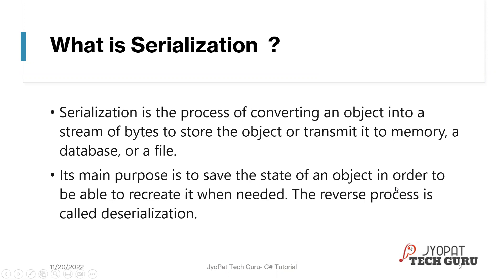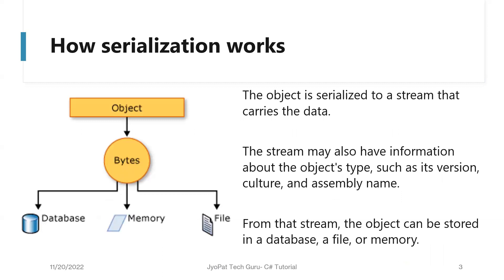Whenever you want to convert a particular object, you are first converting it into bytes. Those bytes can be stored in different ways — either in files, in a database, or in memory. The deserialization process is the reverse: we extract the original object from the converted data. There is also a built-in interface called IFormatter which is useful whenever you want to store the data.